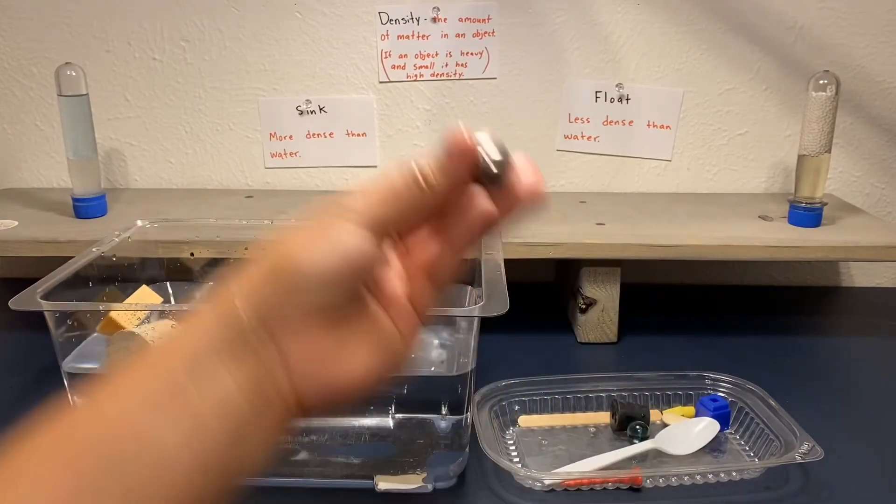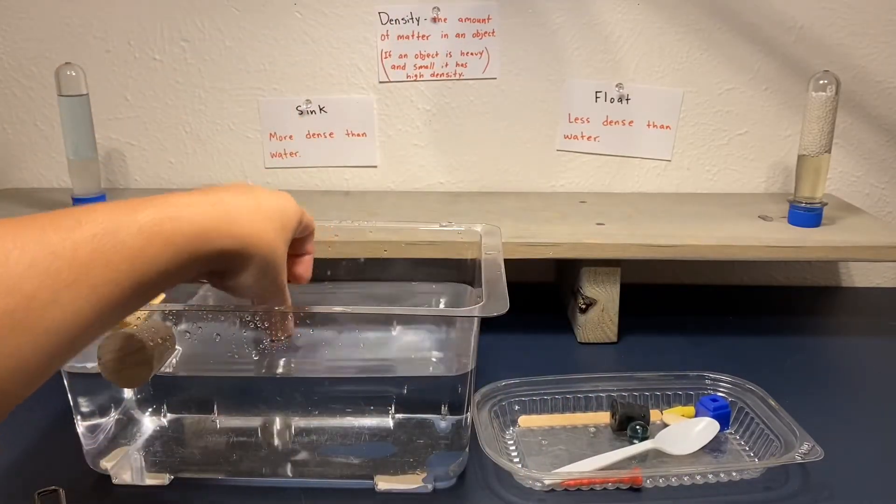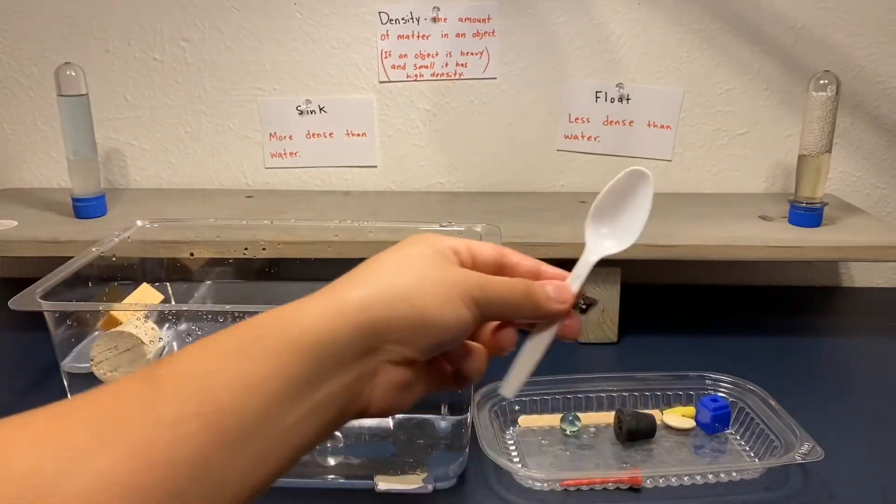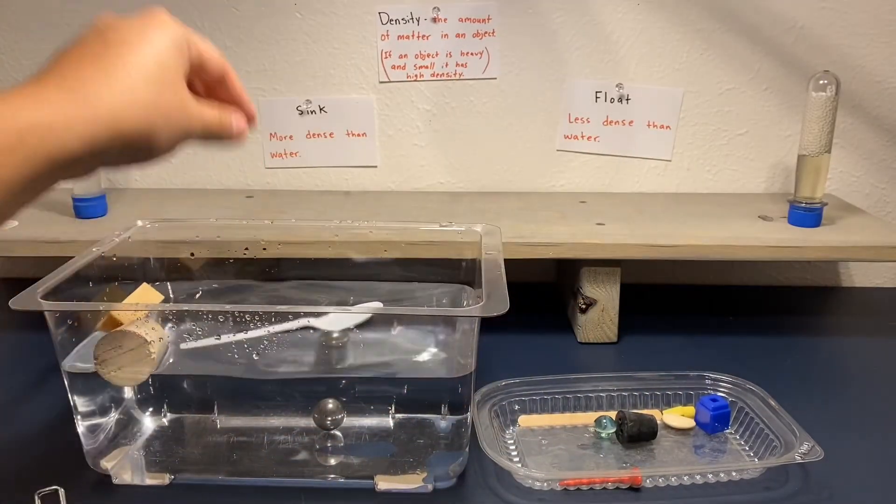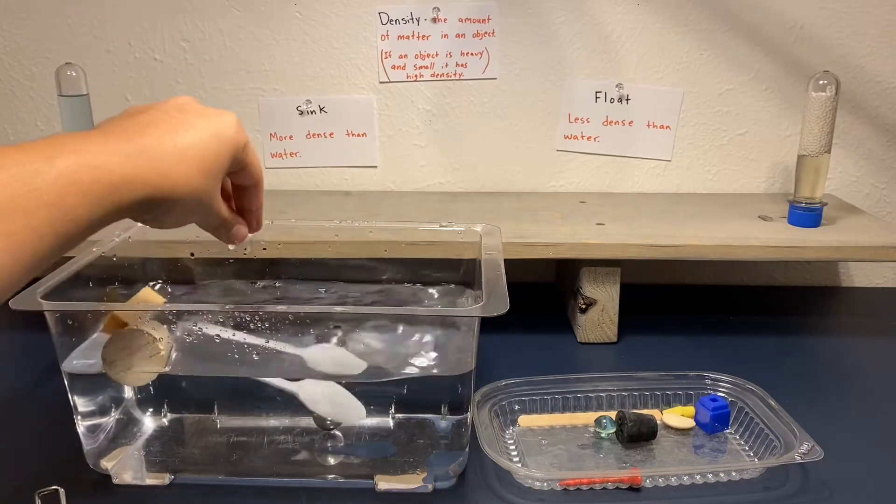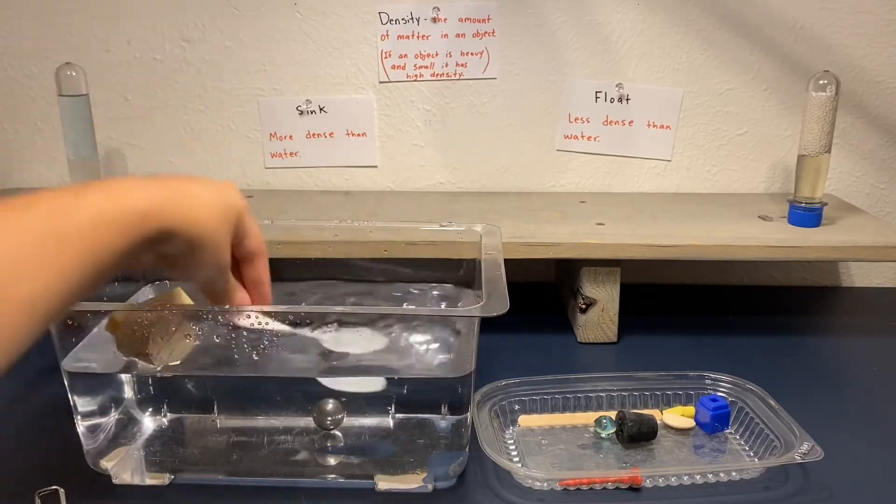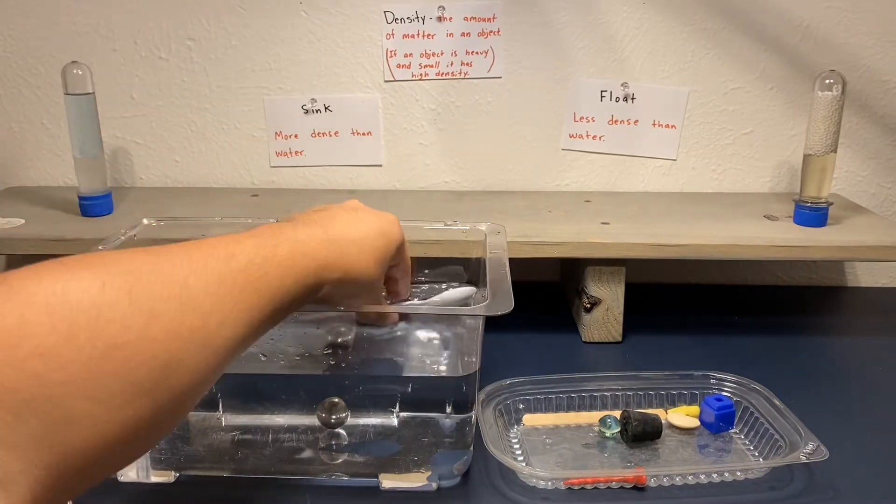Let's try the metal ball. Uh-oh, that one sinks. Let's try the plastic spoon. You gotta push it in. It looks like it's going to be floating. Let's take these objects out.